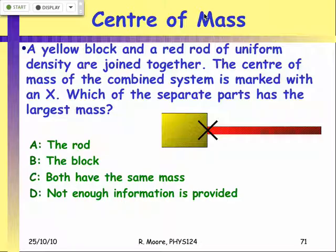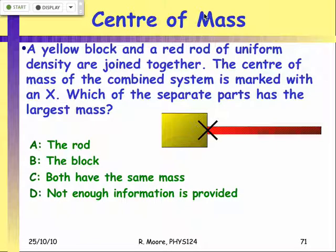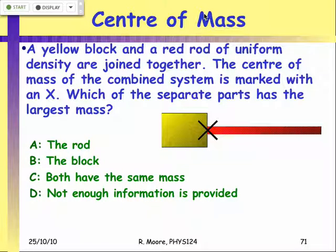First clicker question: we have a yellow block and a red rod with uniform density, joined together. The center of mass of the combined system is exactly where they touch. Which of the separate two parts — the rod or the block — has the largest mass? Options: the rod, the block, both have the same mass, or not enough information.